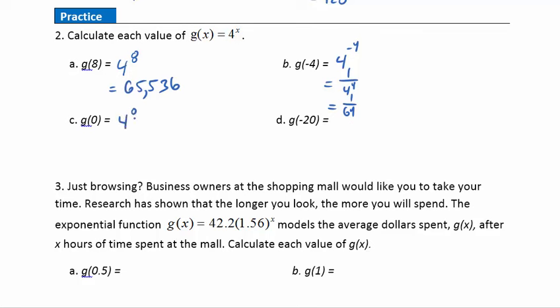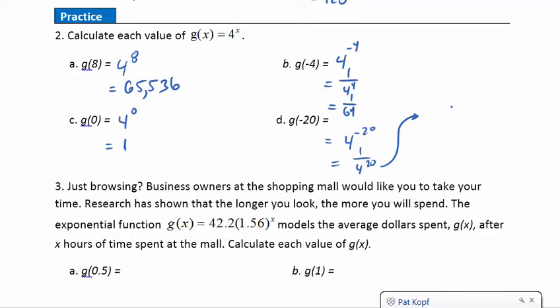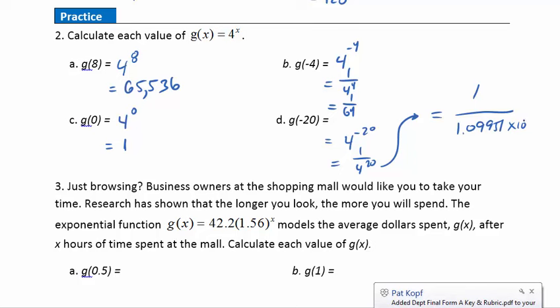For g(0): 4^0 = 1, since anything raised to the zero power is 1. For g(-20): 4^(-20) = 1 over 4^20. The calculator gives 1.09951 × 10^12 in the denominator, making this a very small number overall.